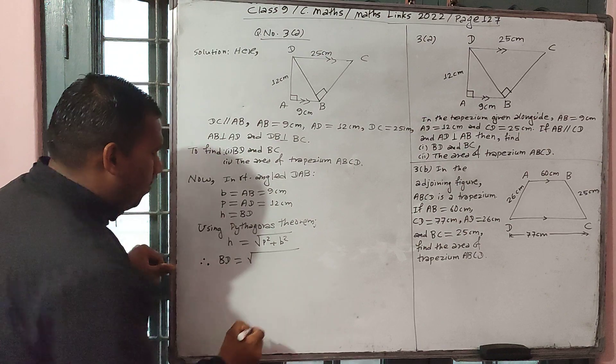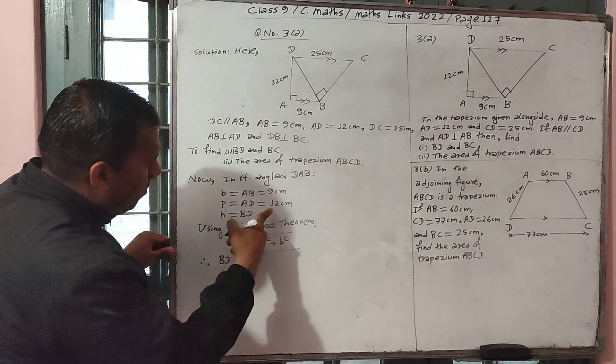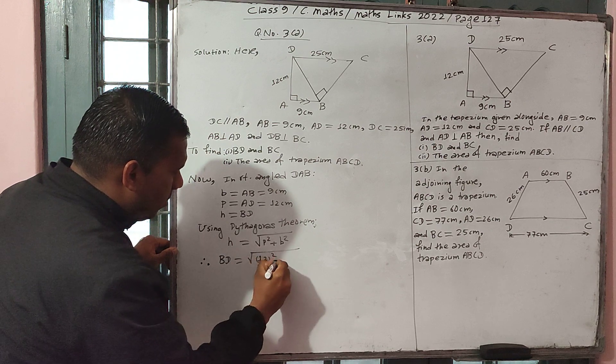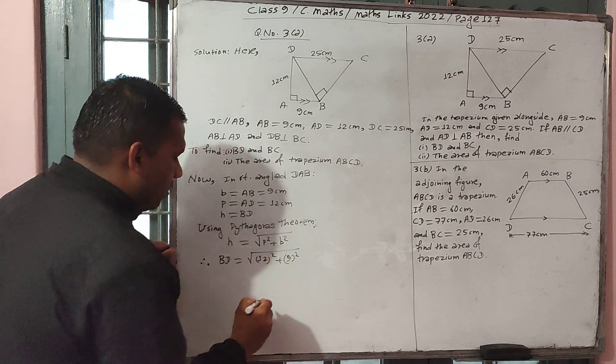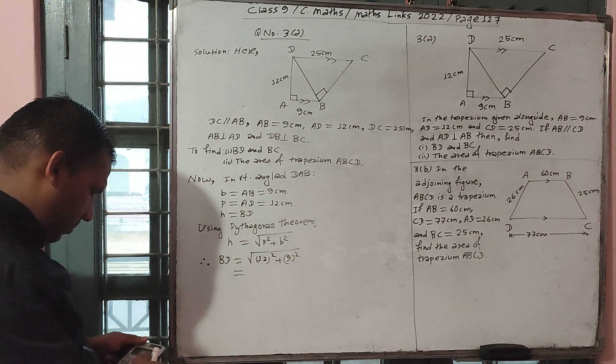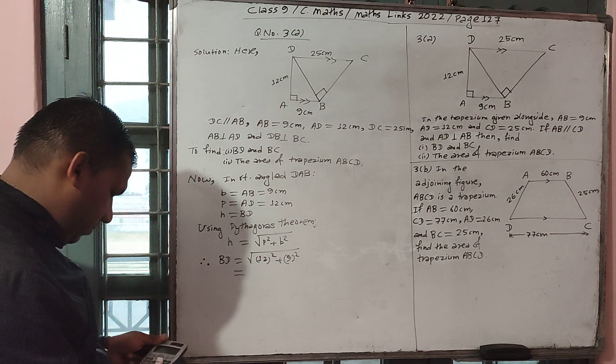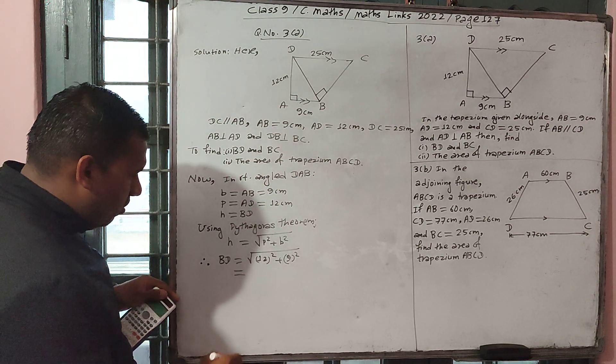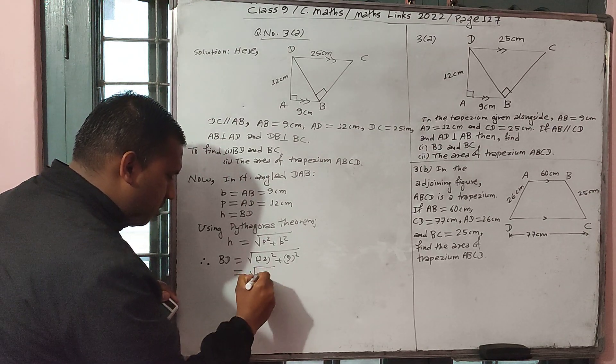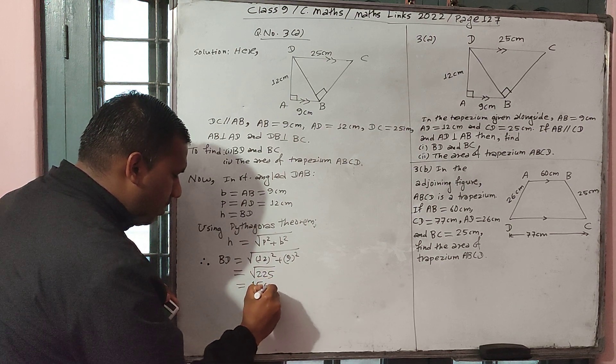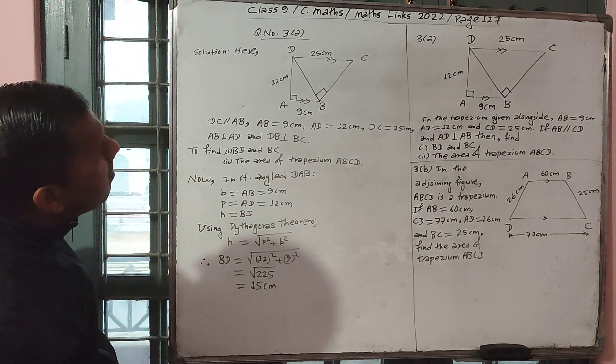Therefore, BD equal to square root of 12 square plus 9 square. Now it becomes square root of 225, that is 15. So BD is 15 centimeter.